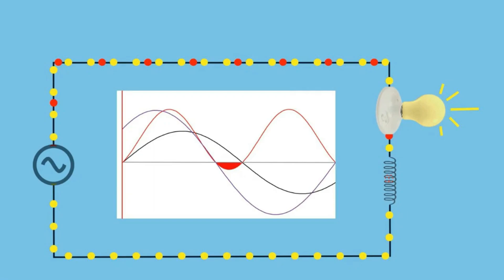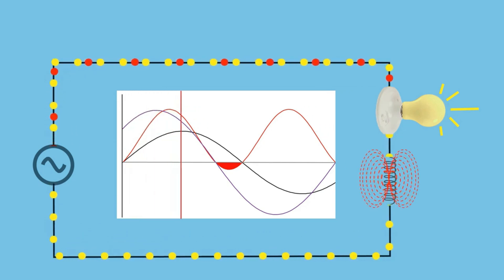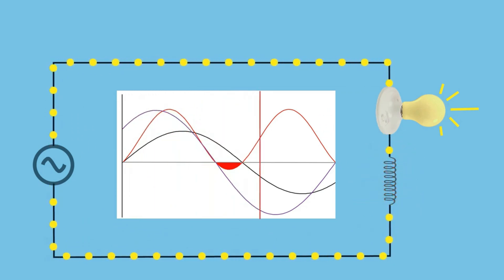But before we get into the animation, I want to point out that this is a simplified teaching tool designed to help us visualize the concepts of active and reactive power. In reality, current, voltage, and power don't behave exactly as depicted here, and their actual flow in a circuit is far more complex than what we can represent visually.